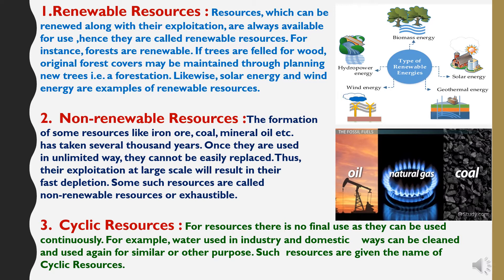Third is cyclic resources. For these resources there is no final use, as they can be used continuously. For example, water used in industry and domestic sewage can be cleaned and used again for similar or other purposes. Such resources are given the name of cyclic resources.